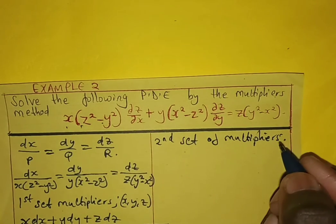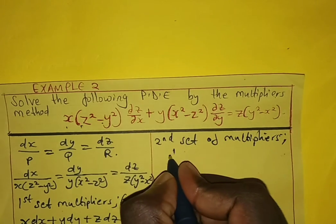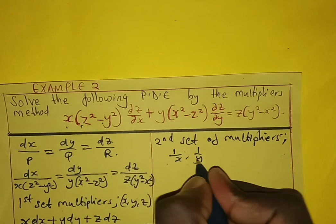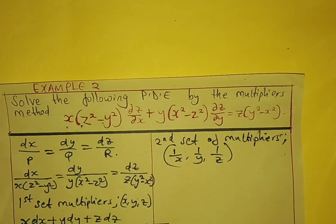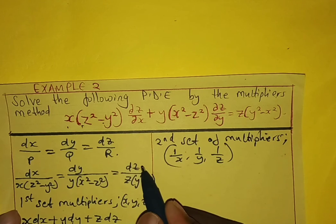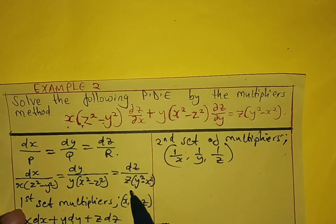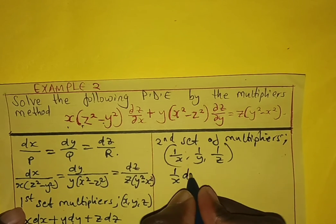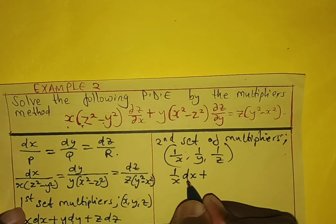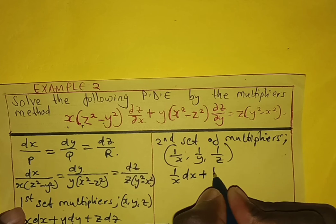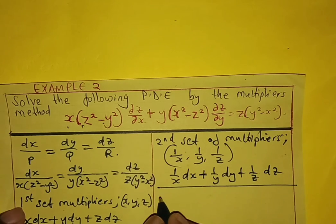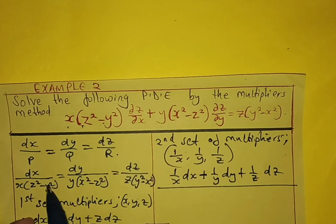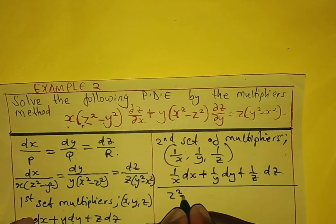We choose our second set of multipliers to be 1/x, 1/y, and 1/z. Again, we multiply this set with the numerator and denominator — when we add the denominator terms it should give zero. Multiplying the numerator gives 1/x dx plus 1/y dy plus 1/z dz. For the denominator: 1/x times x(z² minus y²) gives z² minus y².